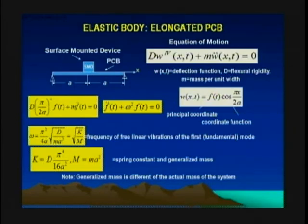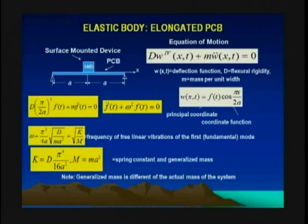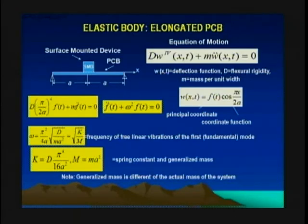Now, if we seek the solution in the form of the equation w as a function, we separate the two variables — time and the coordinate. For the coordinate, whatever happens, the deflections should be distributed in accordance with the cosine function. The maximum displacement should be in the middle, and the displacement at the support should be zero. In this function, the principal coordinate plays the role of the amplitude — at maximum, it's the amplitude of vibrations; otherwise, it's the instantaneous amplitude at the given moment of time.